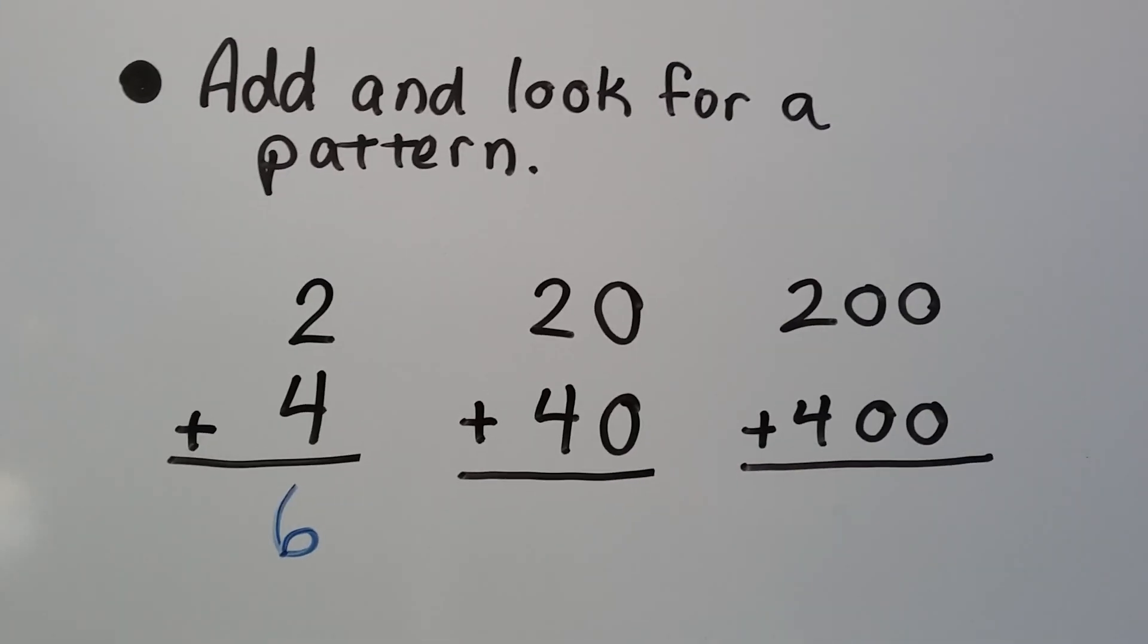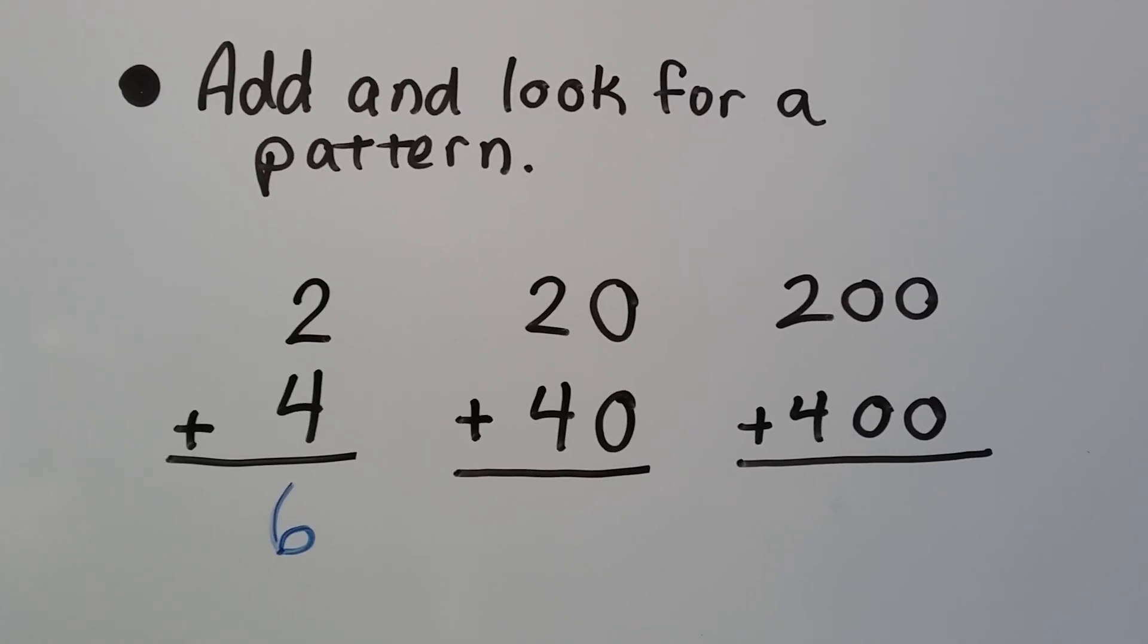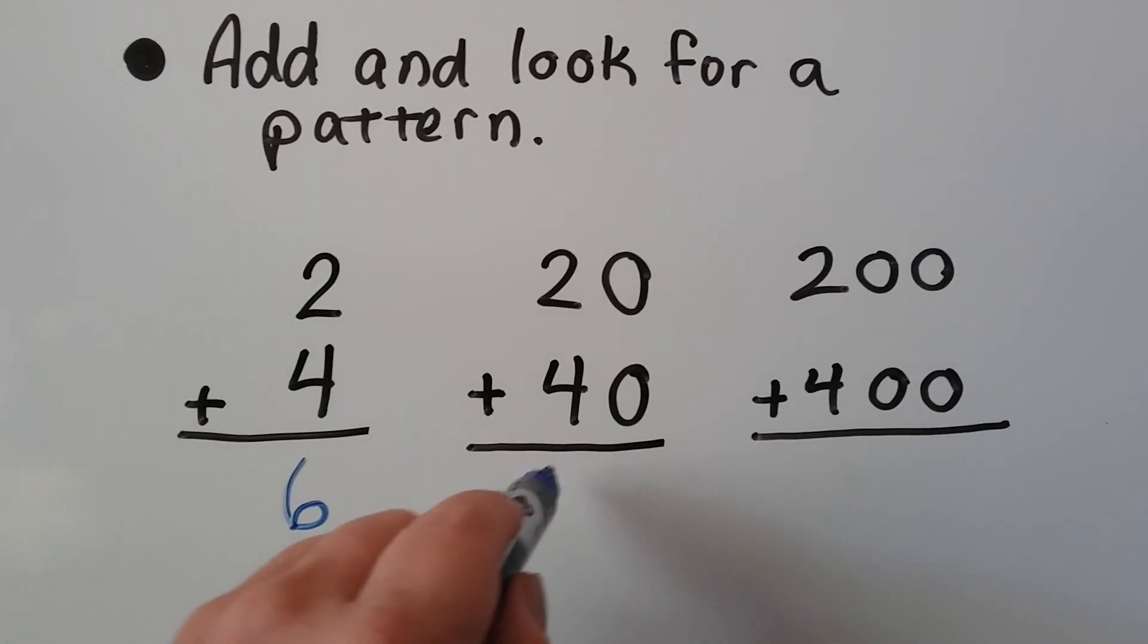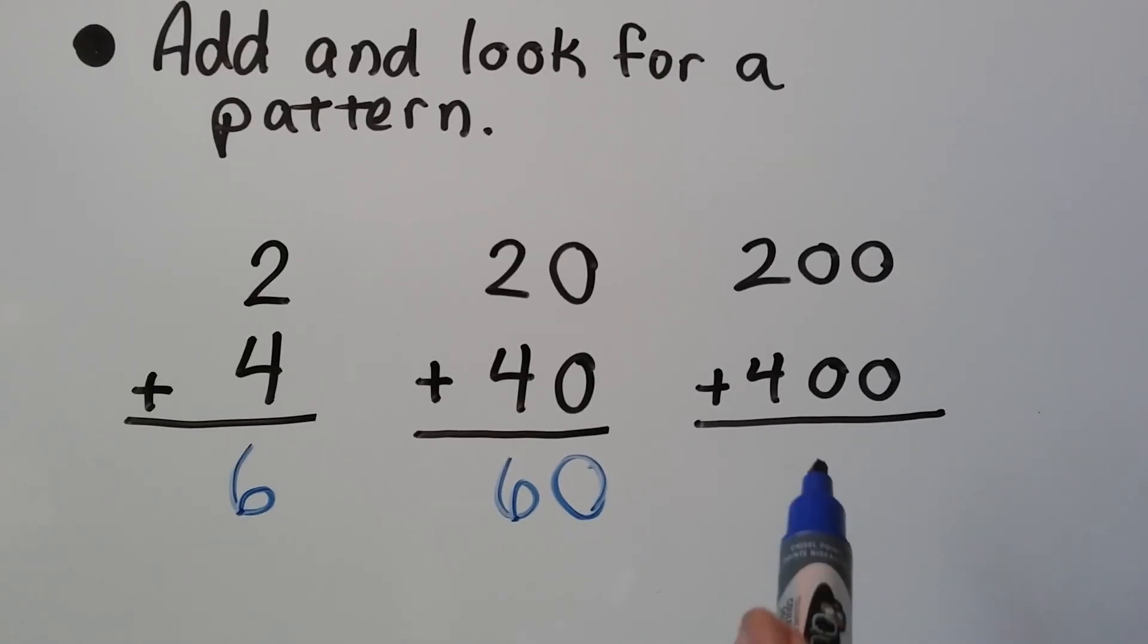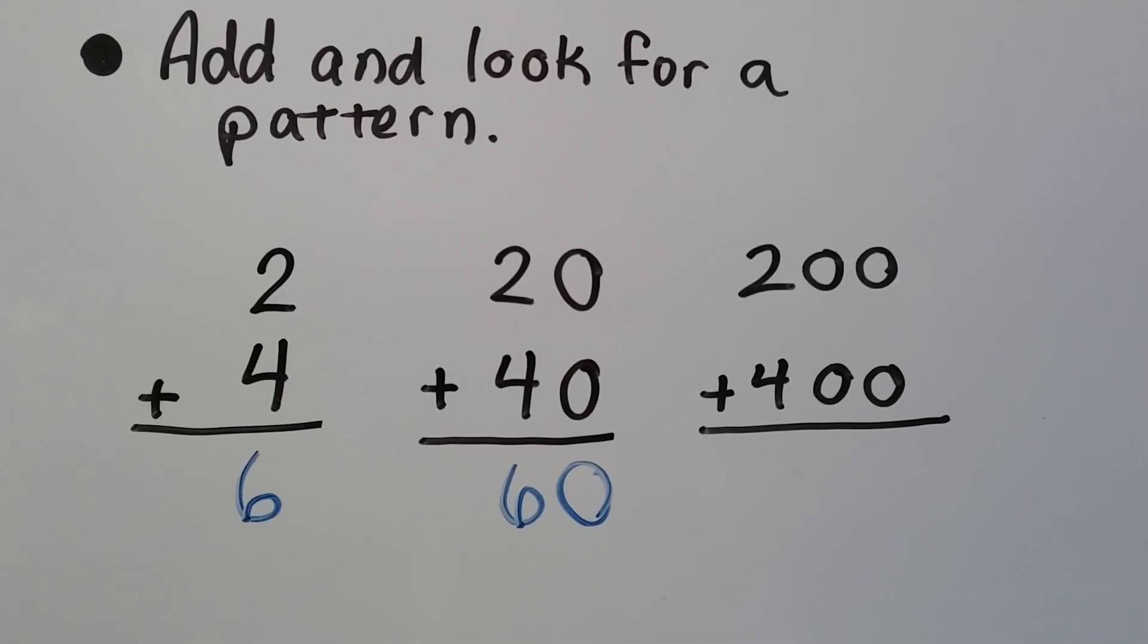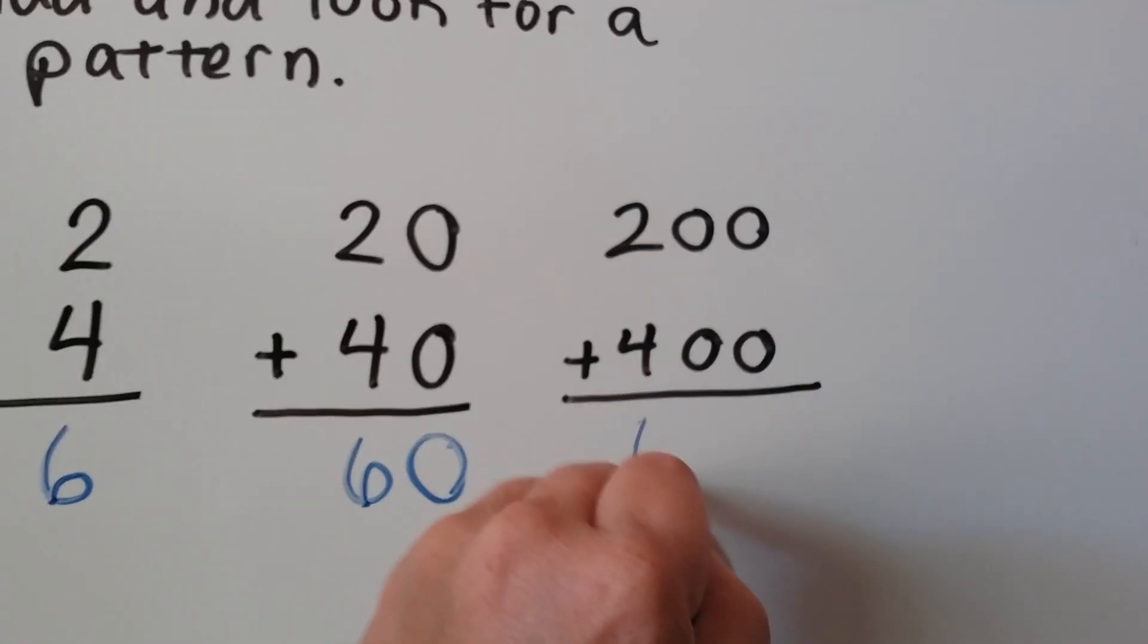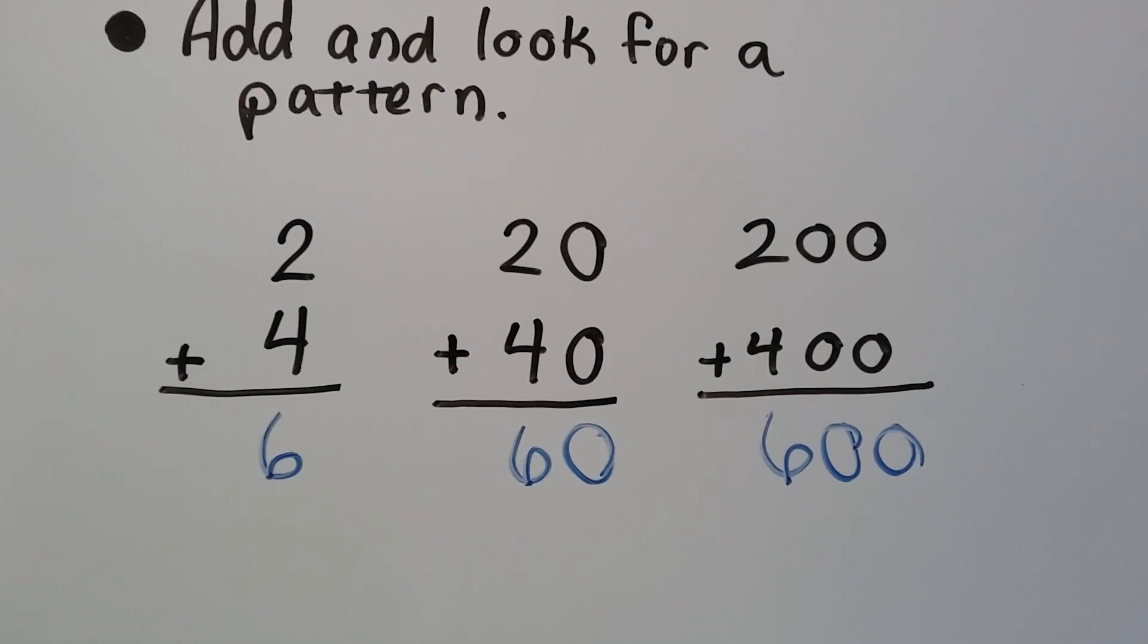Now look, we need to add two digits. Do you remember the quick way to do this? We just think 2 plus 4, which is 6, and we put the zero. So, what happens when we add the hundreds? Well, we think 2 plus 4 again, which is 6, and now we add two zeros. Do you see the pattern?